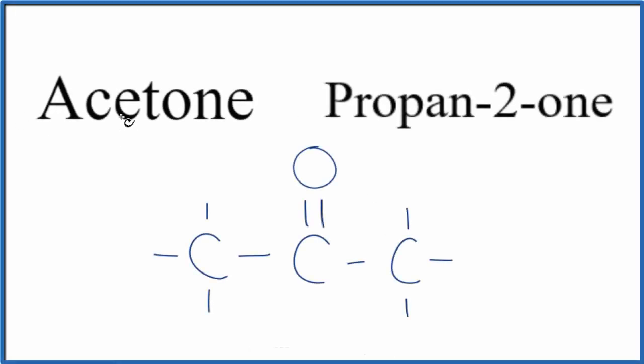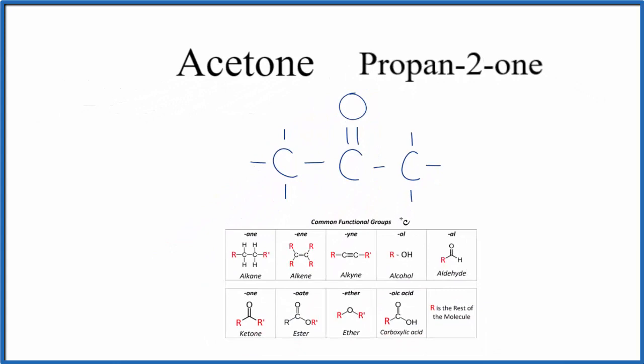Let's look at whether acetone is an aldehyde, ketone, or an alcohol. Acetone is the more common name, while propan-2-one is the more systematic name. If we look at the structure here, we have a double bonded oxygen in the center and then carbon atoms on either side.